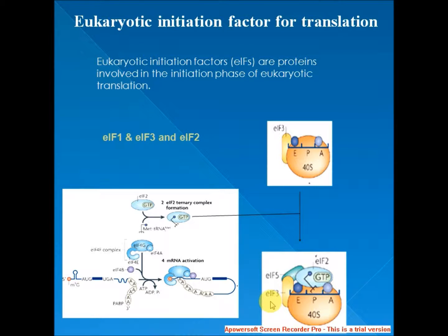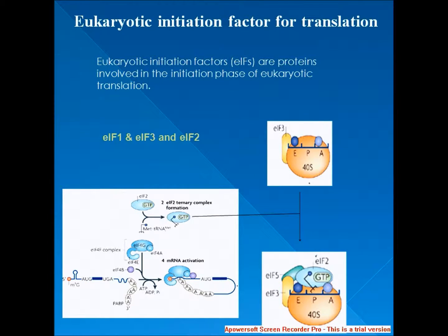In mammals, EIF3 is the largest scaffolding initiation factor, made up of 13 subunits. It is roughly 750 kDa and controls the assembly of the 40S ribosomal subunit on mRNAs that have a 5-prime cap or an IRES (internal ribosomal entry site). EIF3 uses the EIF4F complex or IRES from viruses to position the mRNA near the exit site of the 40S ribosomal subunit, thus promoting the assembly of the pre-initiation complex.